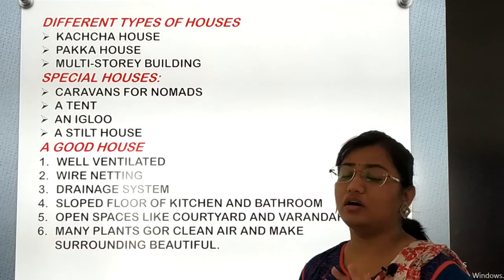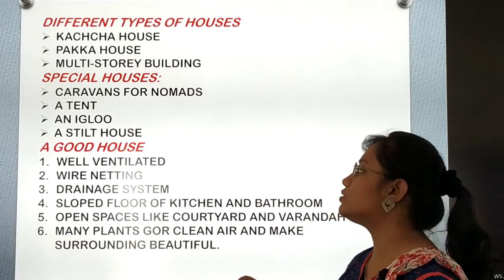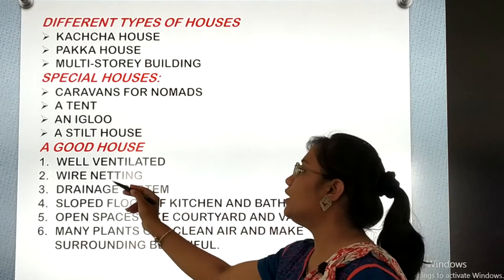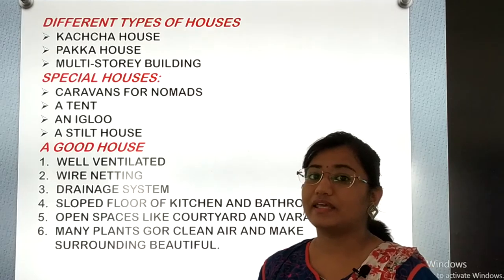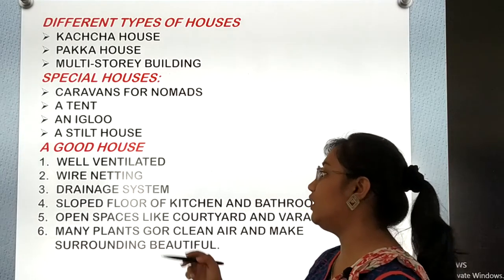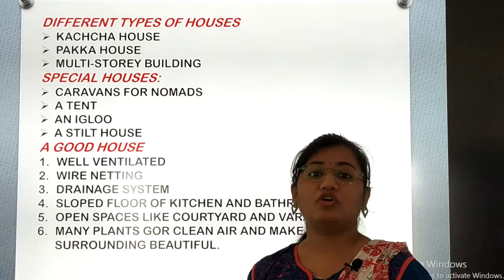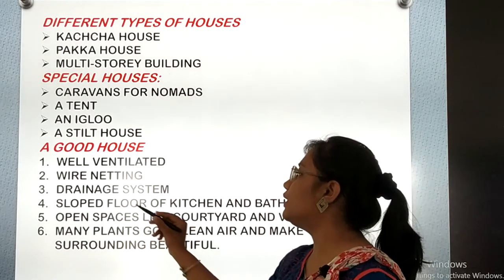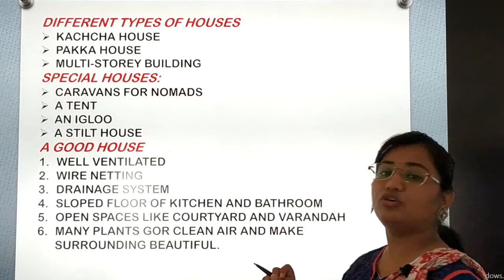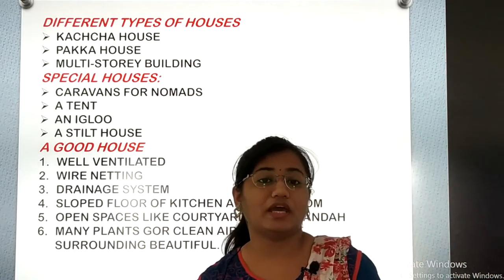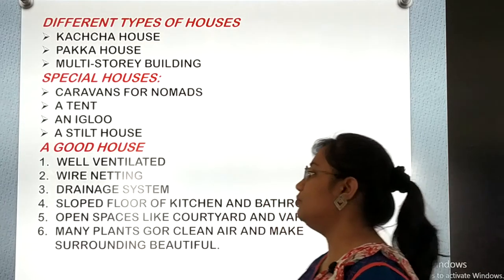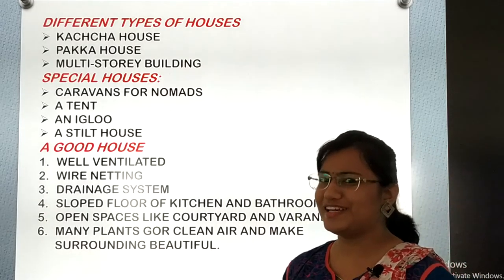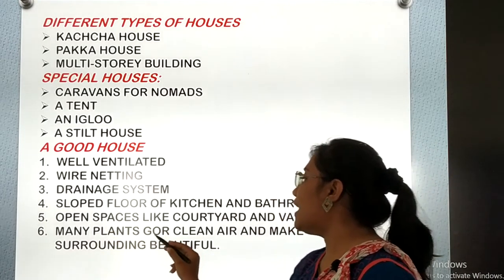We also learned about what makes a good house. It should be well-ventilated so that airflow is good. It should have wire netting to protect from mosquitoes and flies. There should be a proper drainage system and proper water supply so we get clean water. The kitchen and bathroom floors should be sloped so water drains away. And there should be open spaces like a courtyard and veranda.